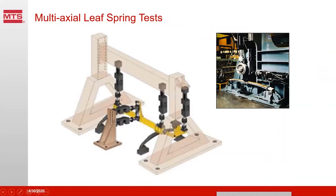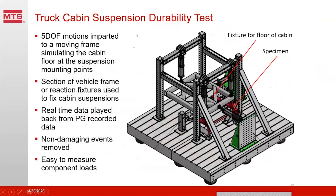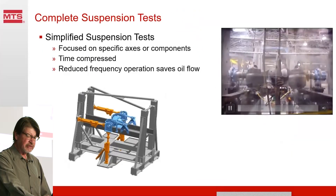Truck leaf springs are very often tested in the laboratory — this one has up to five degrees of freedom. This is an example of a truck cabin suspension durability test that simulates the floor of the cabin. This is the suspension from the cabin down to the frame, and we can move this floor simulator with actuators to simulate the motions that occur on the road, testing the suspension system for dynamics, fatigue, durability, and vibration isolation.